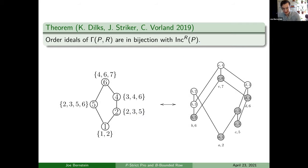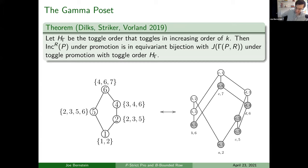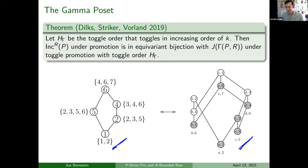Let's see an example. An order ideal on the gamma side corresponds to an increasing labeling on the increasing labeling side. It's a pretty ugly poset, but a very clear bijection once you've defined it: you fill in the box labeled E6 and look at the top element corresponding to E — that's a six. Similarly D4 is filled in, so four is filled in there. So any order ideal on the gamma side corresponds to an increasing labeling. Moreover, we have that bijection, and if you do Bender-Knuth involution promotion on this side, it corresponds to some toggle order on the gamma side — not necessarily top to bottom — and they call this H_gamma.